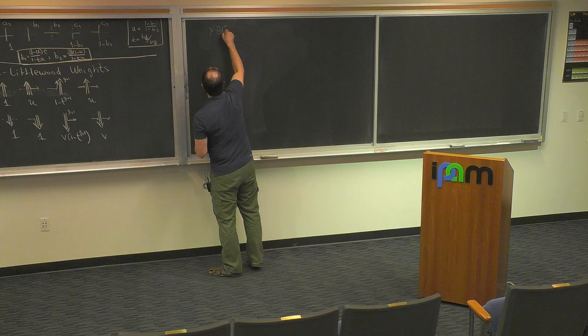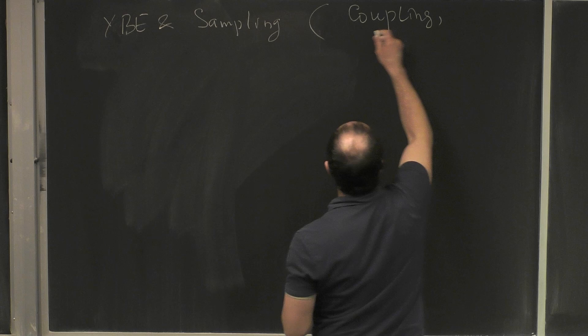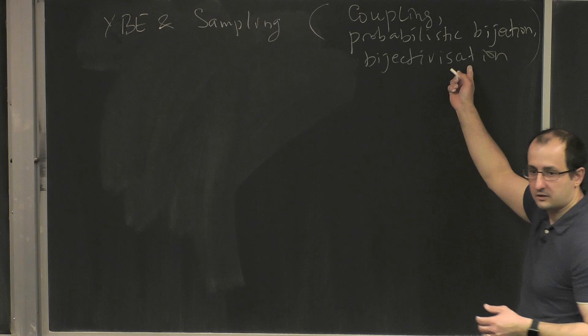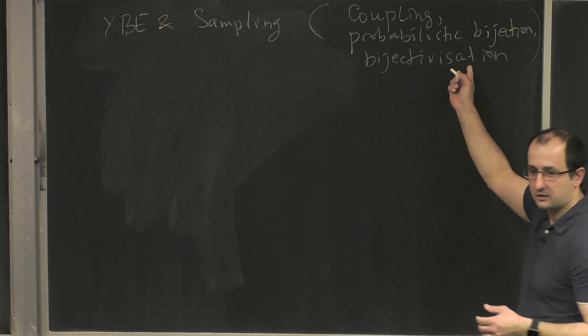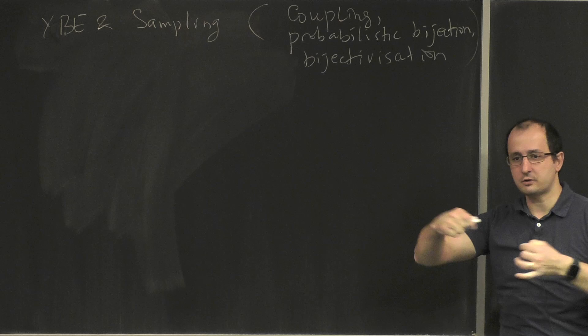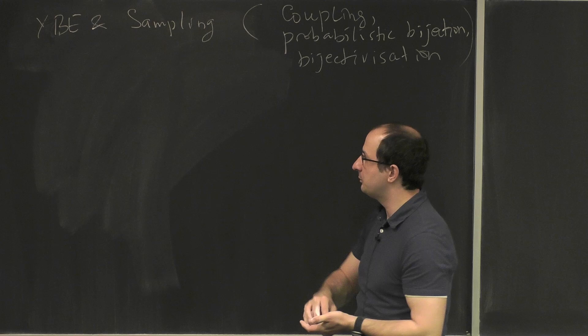This is called Yang-Baxter sampling, or coupling, or probabilistic bijection, or bijectivization — an invented word used in papers with Bufetov and others for easier Google searching. This is much like RSK: in RSK you have an identity and try to match term by term. Here, when you put t in, term-by-term matching is no longer possible, so bijection is no longer possible — you have to match a piece of something into a piece of something.